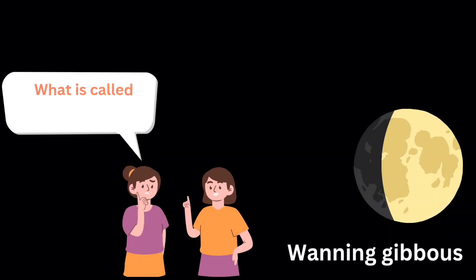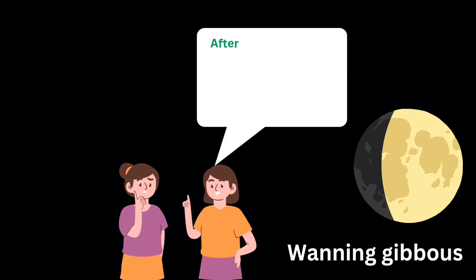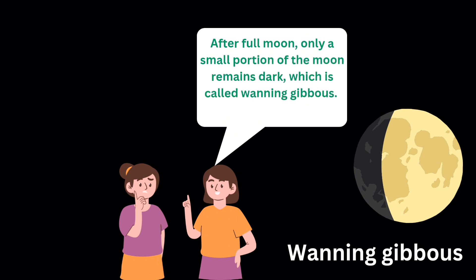What is called waning gibbous? After full moon, only a small portion of the moon remains dark. It's called waning gibbous.